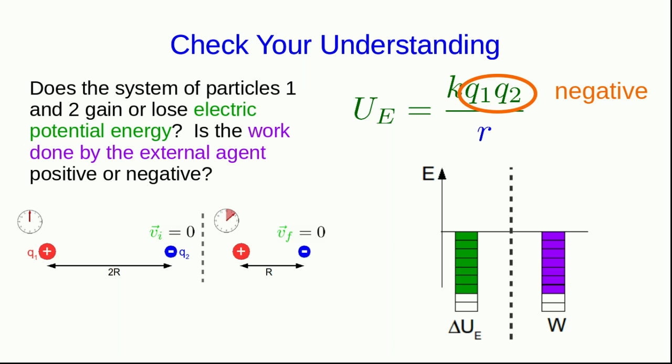Now note, you might be a little confused about why the work done by the external agent could be negative. After all, this force supposedly perhaps carried q2 from its original position to its final position. Wasn't it in the direction of motion, then? Well, no, it wasn't at all.